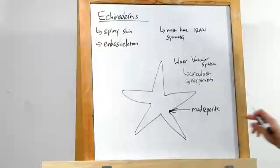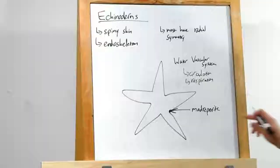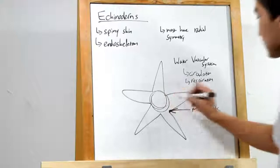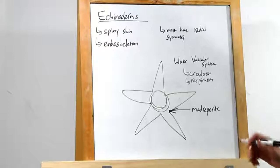Here I have a sea star. Okay, it doesn't look too much like a sea star, but you can tell it looks like one. Alright, and the water vascular system has got this large ring in the center. It opens up to this thing called the madreporite. It's just an opening to the outside, not too much to worry about.